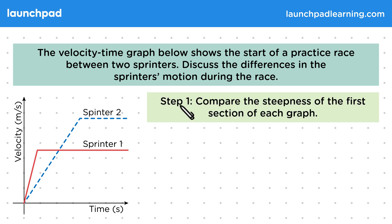So for step one, compare the steepness of the first section of each graph. So let's look at these two diagonal sections. We can see that the graph for sprinter one is steeper than the graph for sprinter two. The question asks us to compare the motion though, rather than just the graphs. So we should think about what this means. Remember that the steeper a velocity-time graph is, the greater an acceleration it represents. So we can say that sprinter one had the greater acceleration.